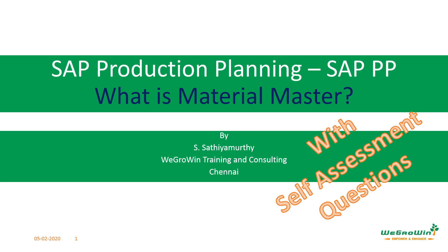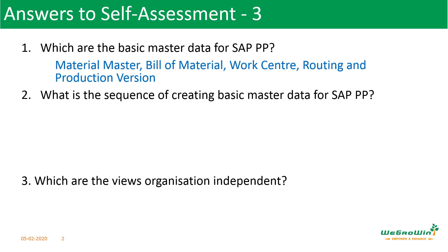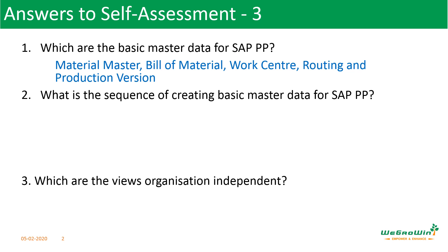Now let us review the answers for self-assessment 3 shared in the last session. Which are the basic master data for SAP Production Planning? Those are Material Master, Bill of Material, Work Center or Resource, and then Routing or Master Recipe and Production Version. What is the sequence of creating basic master data for SAP PP? First, you have to create Material Master, based on which you create the Bill of Material. Then the Work Center has to be created, and then Routing has to be created combining the Bill of Material and Work Centers with the standard time and other details.